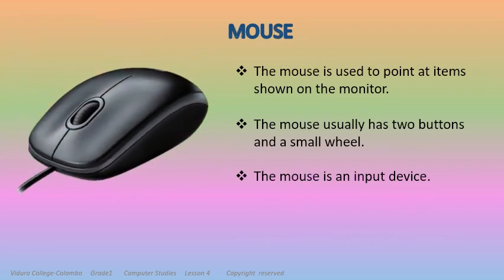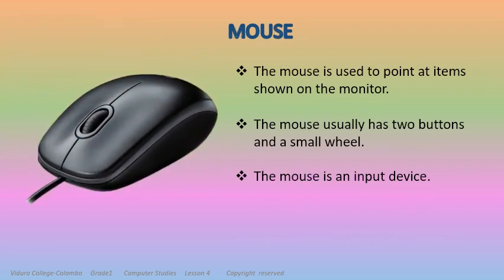Mouse. The mouse is used to point at items shown on the monitor. The mouse usually has two buttons and a small wheel. The mouse is an input device.